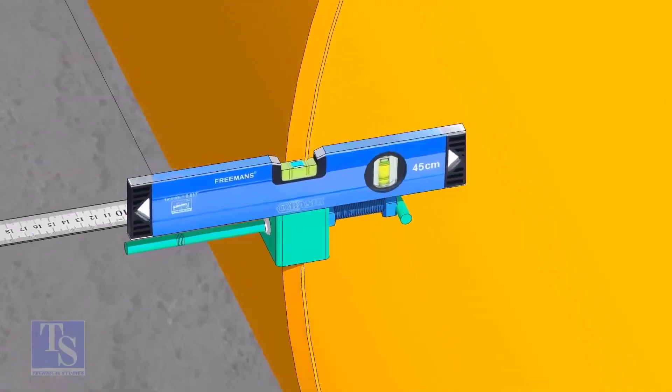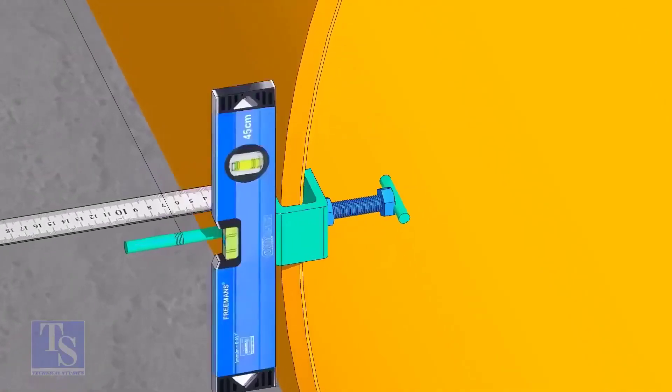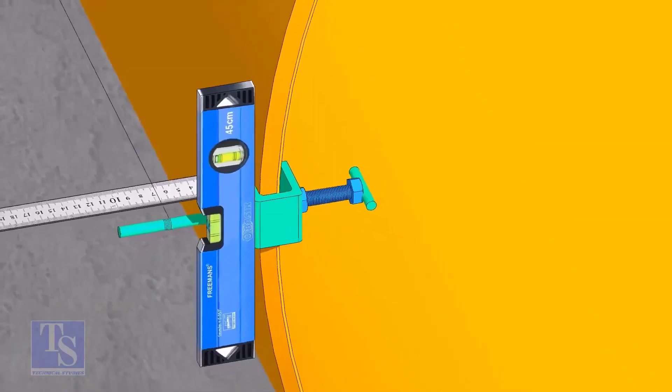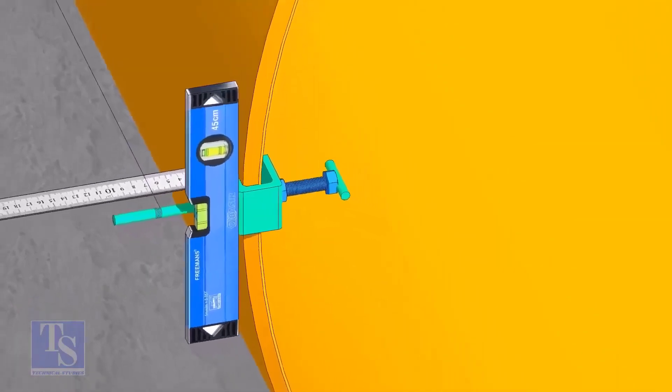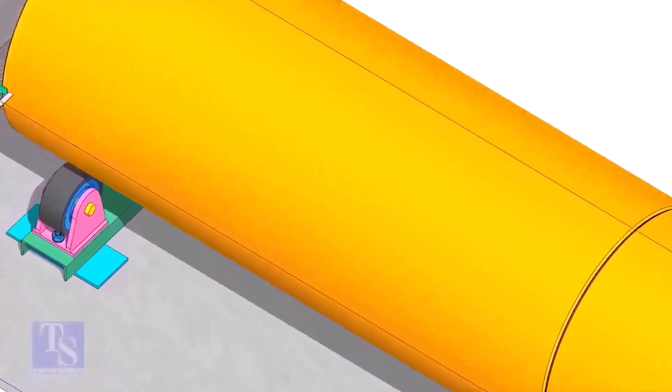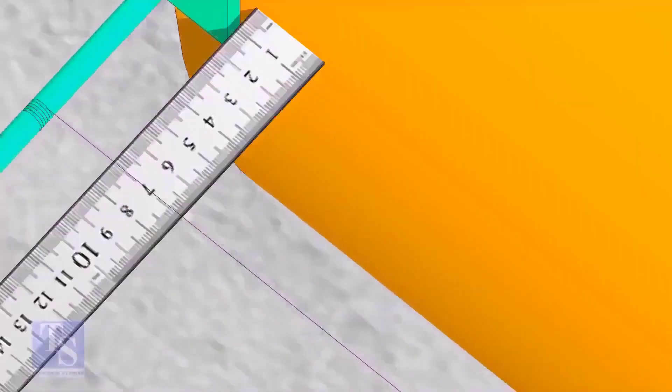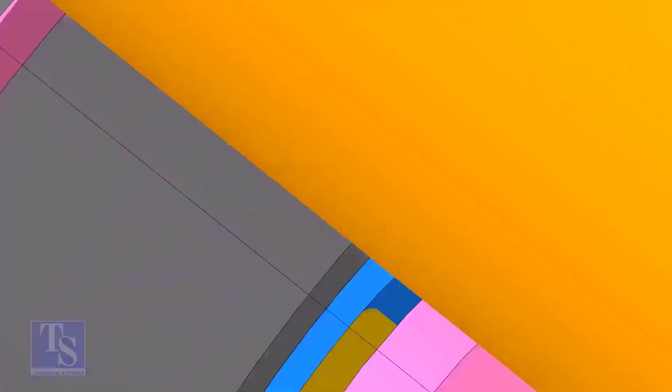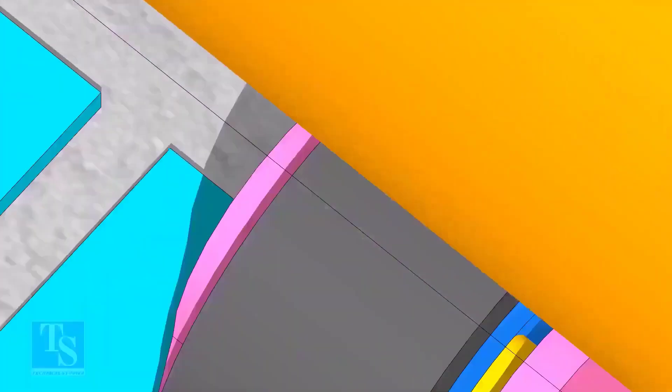As you put the clamps roughly 90 degrees apart, make sure the clamps are level. Tie the piano wire tightly on these clamps. Make sure the distance between the shell to the piano wire is equal at both ends.